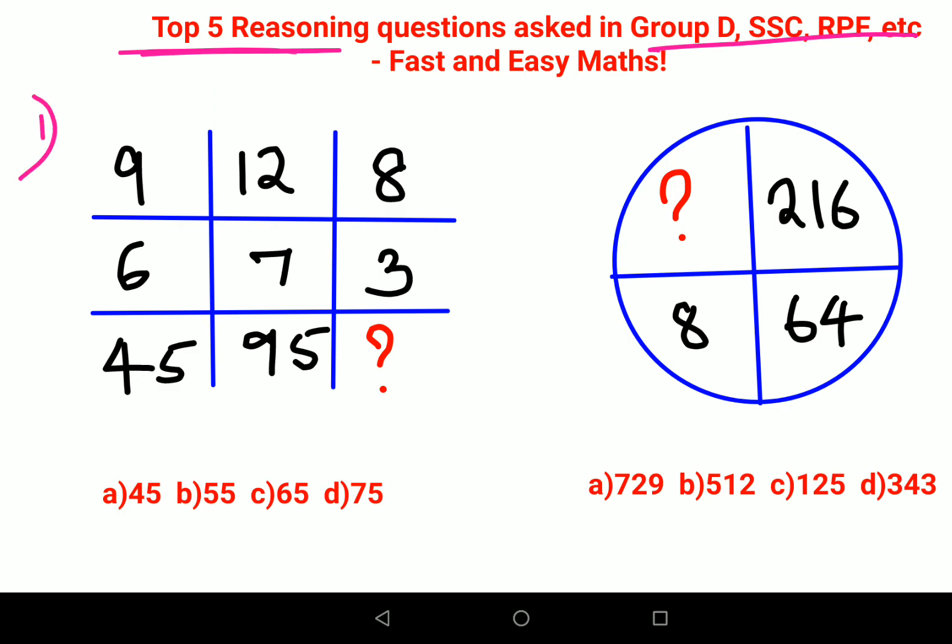With the first one. Here we have 9, 6, and 45, then we have 12, 7, and 95, then we have 8, 3, and something over here. Now if you look closely, either we do this horizontally or we do this vertically.